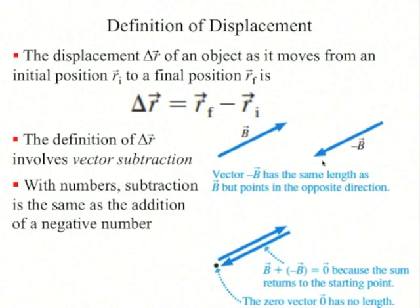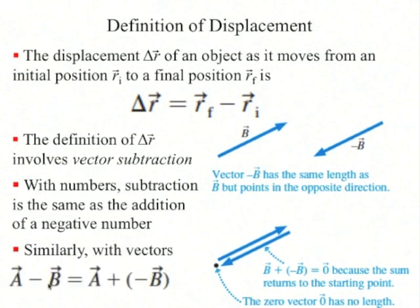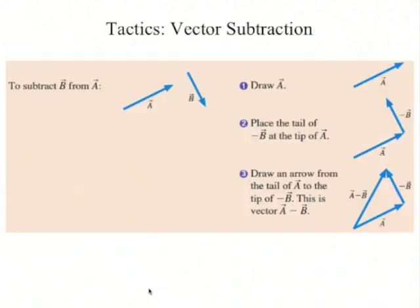The negative of a vector is the same length as the original vector but points in the opposite direction. With numbers, subtraction is the same as the addition of a negative number — it's similar with vectors. a minus b is defined as a plus negative b. So to subtract vector b from vector a, first draw a, then draw negative b (same as b but opposite direction), place the tail of negative b at the tip of a, and draw an arrow from the tail of a to the tip of negative b. This gives the vector a minus b.